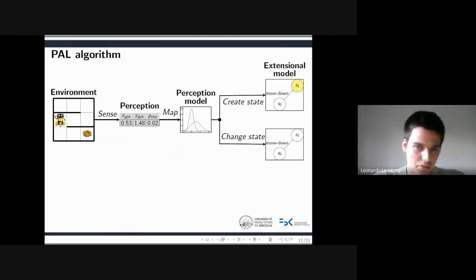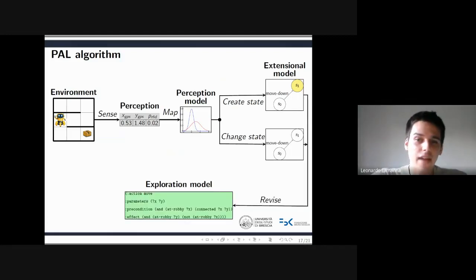If the destination state is a goal one, then the PAL algorithm stops and returns success. Otherwise, the agent checks if the last executed action has failed, and in such case it revises the exploration model. We assume that an action execution failure occurs when the agent doesn't change state after executing an action.